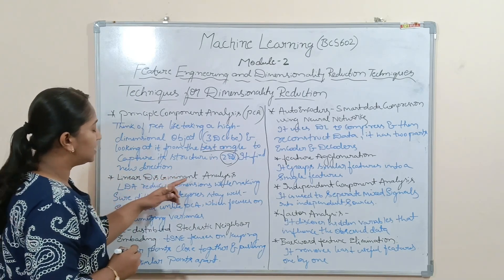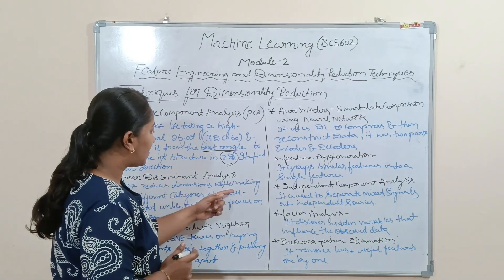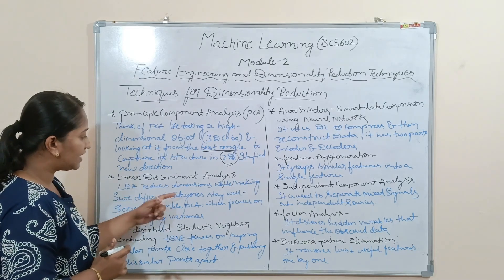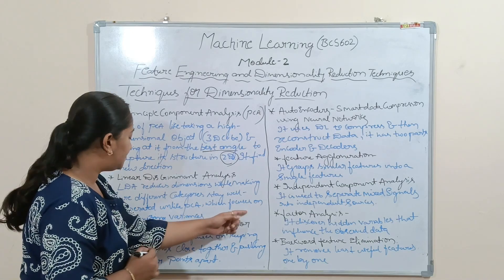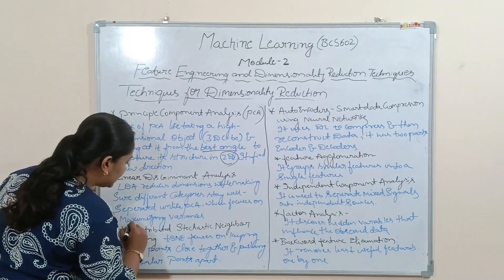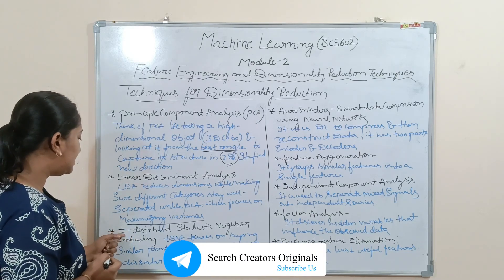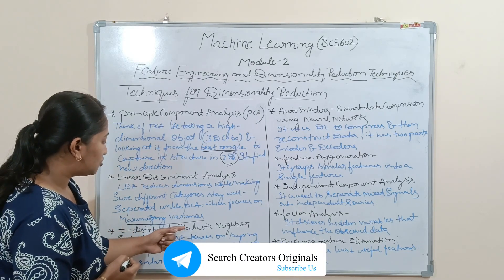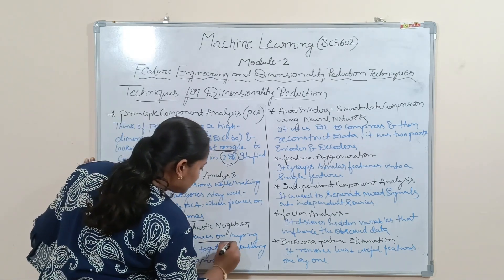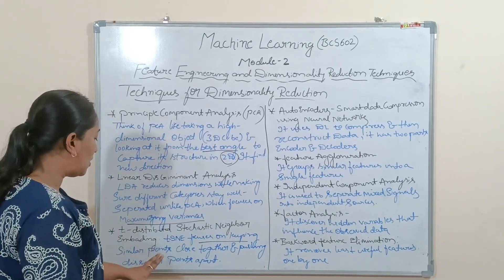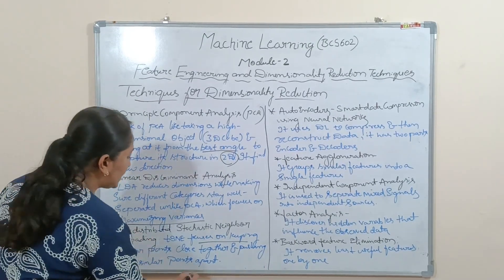The next technique is Linear Discriminant Analysis (LDA), which reduces dimensions while making sure different categories stay well separated, unlike PCA which focuses on maximizing variance. The next technique is t-distributed Stochastic Neighbor Embedding (t-SNE), which focuses on keeping similar points close together and pushing dissimilar points apart.